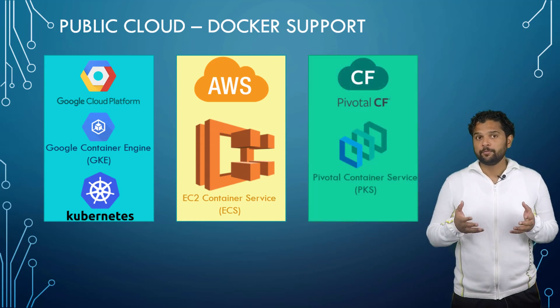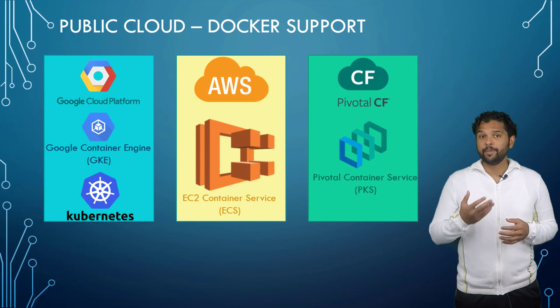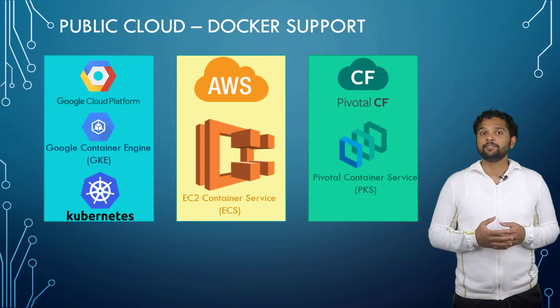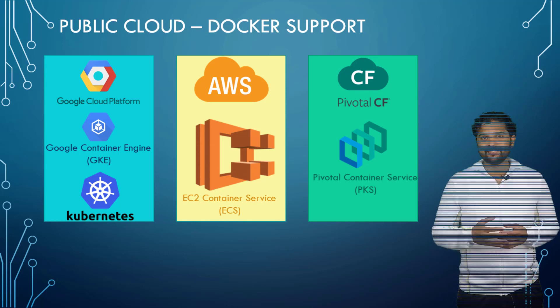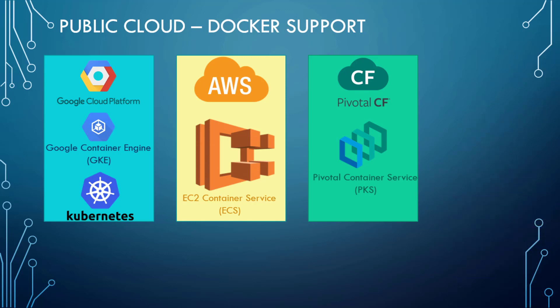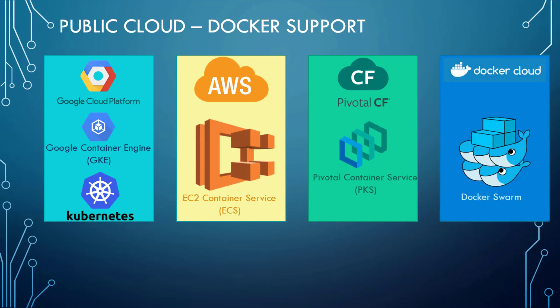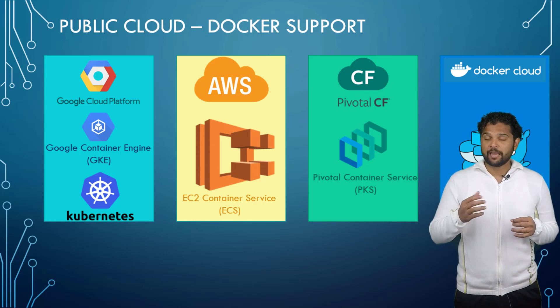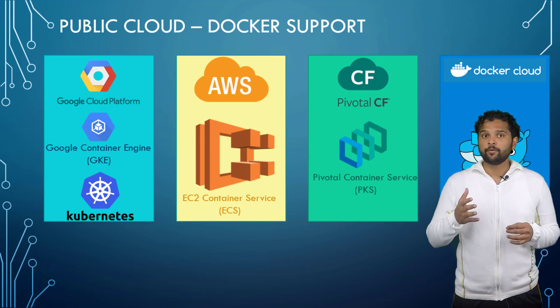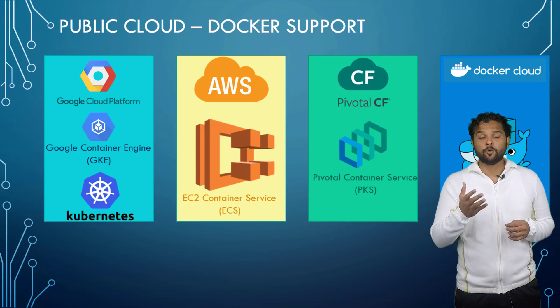On-premises solutions like Pivotal Cloud Foundry have PKS, which stands for Pivotal Container Service, and it also uses Kubernetes underneath. Docker's own container hosting platform, Docker Cloud, uses Docker Swarm underneath to orchestrate containers. As you can see, containers and Docker are supported everywhere and there are many options to host containers online.